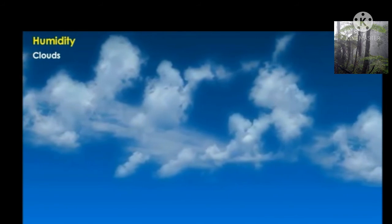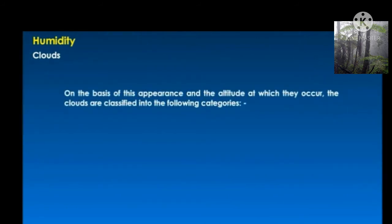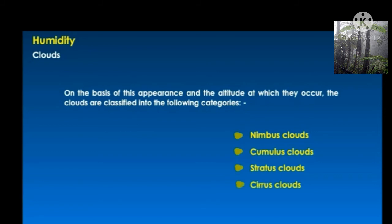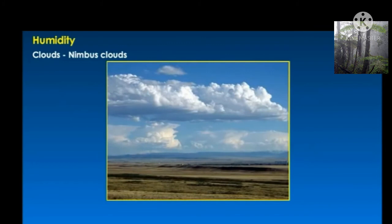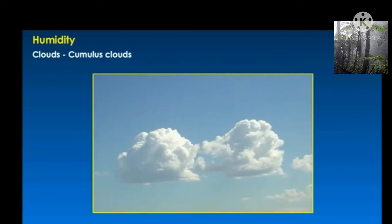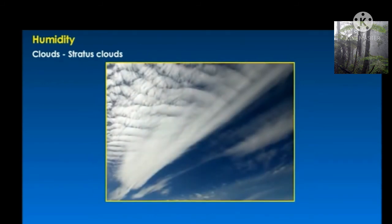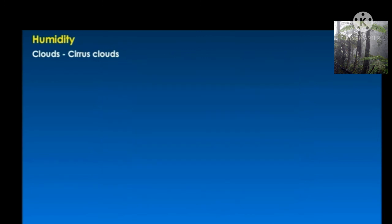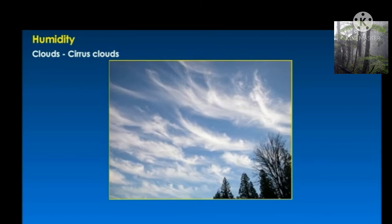Clouds are a mass of minute droplets of water formed by the condensation of water vapors in the upper atmosphere. On the basis of appearance and altitude, clouds are classified into four categories: Nimbus clouds occur at low levels, are dark gray or black, and cause heavy rainfall. Cumulus clouds appear like a cauliflower, are often white or gray, and are also rain-bearing. Stratus clouds appear like thin sheets in the sky, are whitish, and hardly bring any rainfall. Cirrus clouds look like birds' feathers — often known as feathery clouds — and do not bring rainfall.